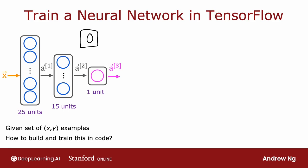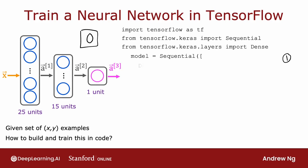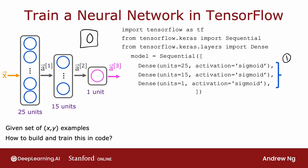Let me go ahead and show you the code that you can use in TensorFlow to train this network. And then in the next few videos after this, we'll dive into the details to explain what the code is actually doing. So this is the code you would write. This first part may look familiar from the previous week, where you are asking TensorFlow to sequentially string together these three layers of a neural network — the first hidden layer with 25 units and sigmoid activation, the second hidden layer, and then finally the output layer.